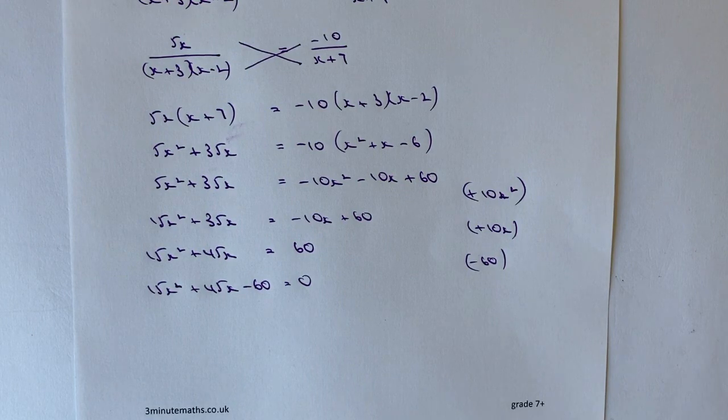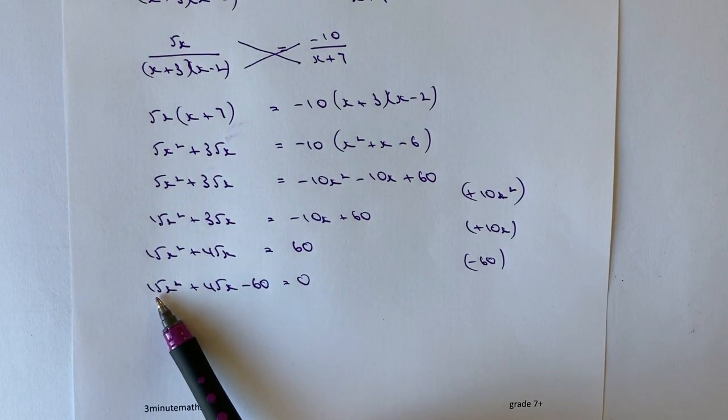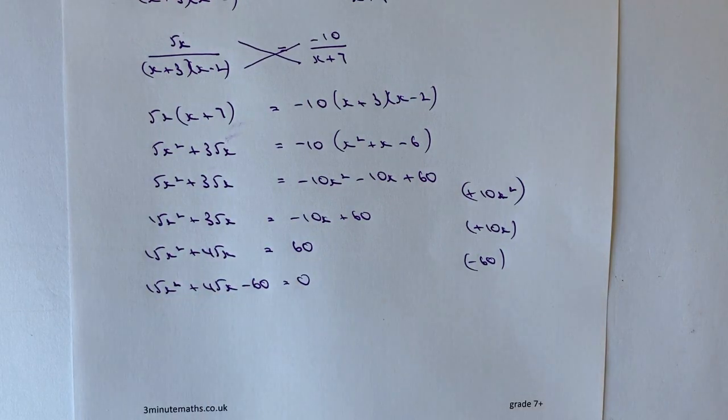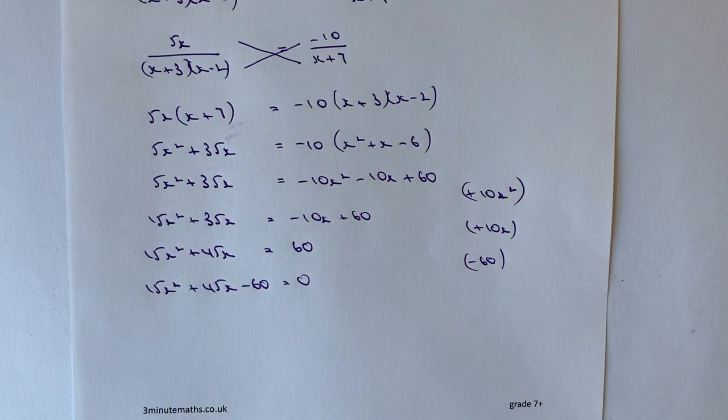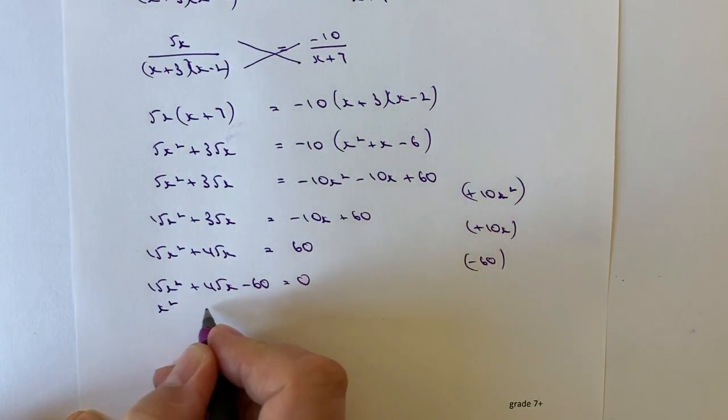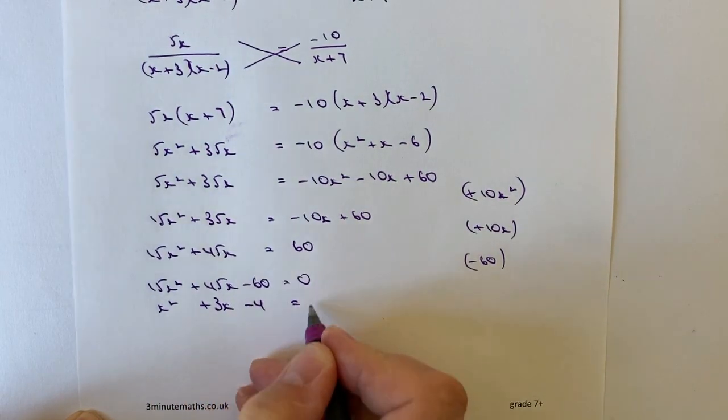You've got a couple of options here. Probably the best option is actually to divide through by 15. Hopefully you can see that 15x squared is divisible by 15, this is divisible by 15, and this is divisible by 15. You could go off and have a look at using the quadratic formula or something like that, but to be honest with you, if you just divide through by 15, you're going to end up with x squared plus 3x minus 4 equals 0.